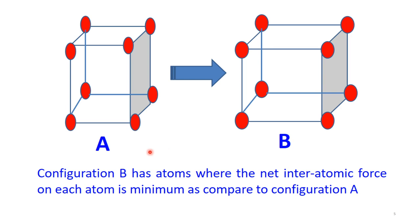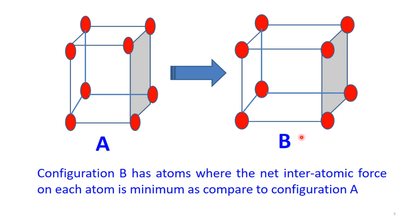For example, from two figures showing eight atoms each — figure A and figure B — configuration B has atoms where the net interatomic force on each atom is minimum compared to configuration A. In A, atoms are very close to each other, while in B they are further apart, so B has less energy than A.